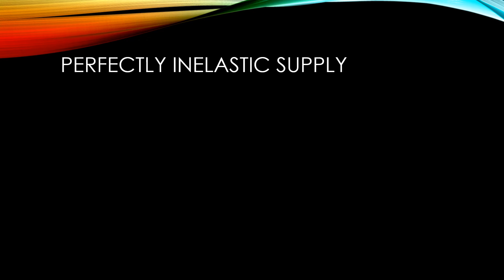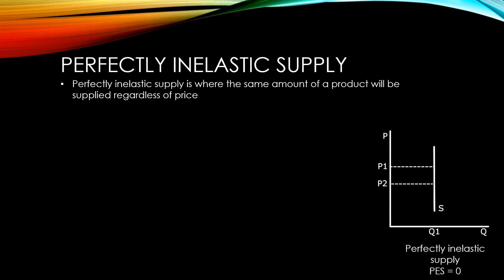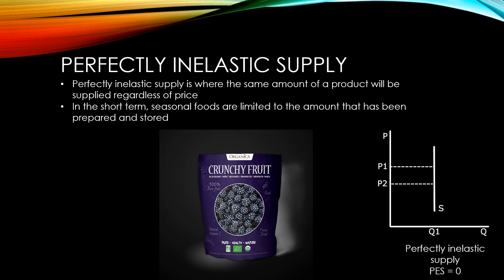Perfectly inelastic supply is where the same amount of a product will be supplied regardless of price. In the short term, seasonal foods have perfectly inelastic supply, because the supply is limited to the amount that has been prepared and stored when they were available.